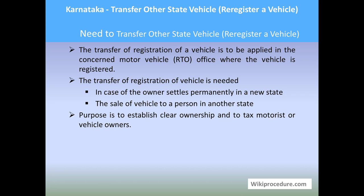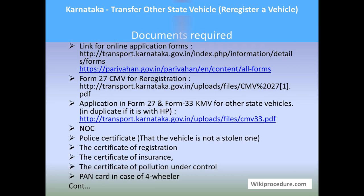The basic purpose is to establish a clear ownership title for the government to tax and send notifications. Let us see the documents required for this. You need to download Form 27 and Form 33, which you can get from the online portal — the Karnataka transport portal as well as Parivahan.